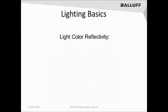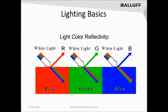Next, let's look at light color reflectivity. Through the use of manipulating the color of a light source against the color of an object or part, we can take advantage of reflecting specific wavelengths of light back to the camera. This allows us to better highlight or feature a contrast in a known feature of the part we're trying to see. In this example, we're using a white light source with red, green, and blue components reflecting off of colored objects. Starting with the red object, the red is best reflected while the green and blue are absorbed, meaning any red feature on the part will be readily reflected back with greater contrast to the imager.